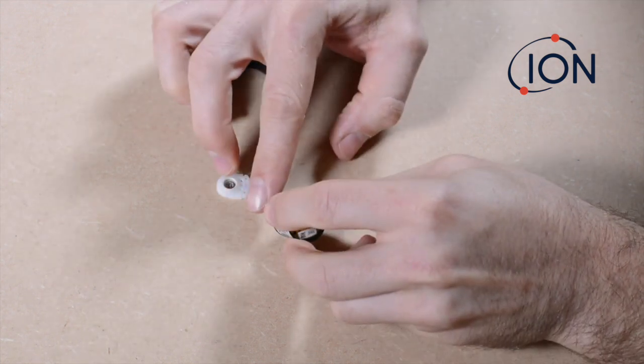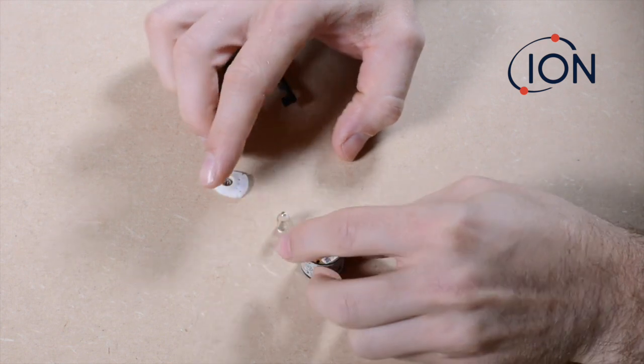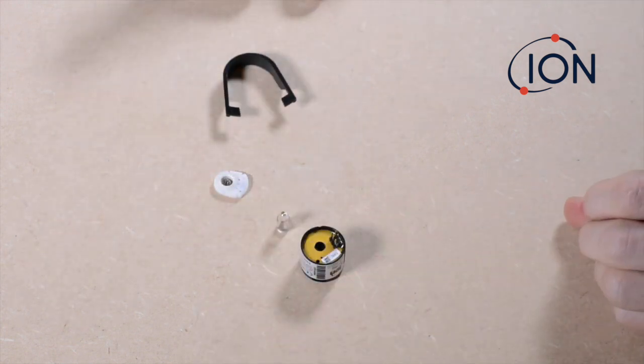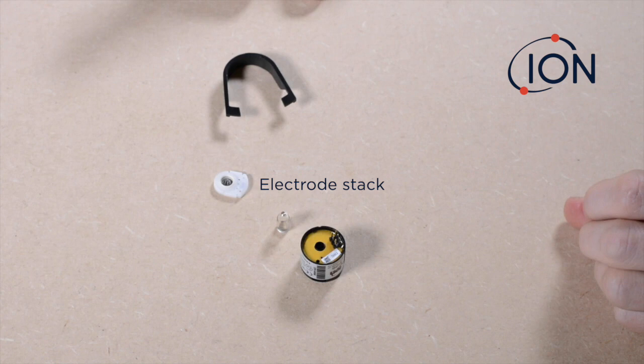You should now be able to easily remove the electrode stack and separate the mini-PID into its three components: the electrode stack, the lamp, and mini-PID body. Within the mini-PID body there is also a spring that will occasionally come loose.